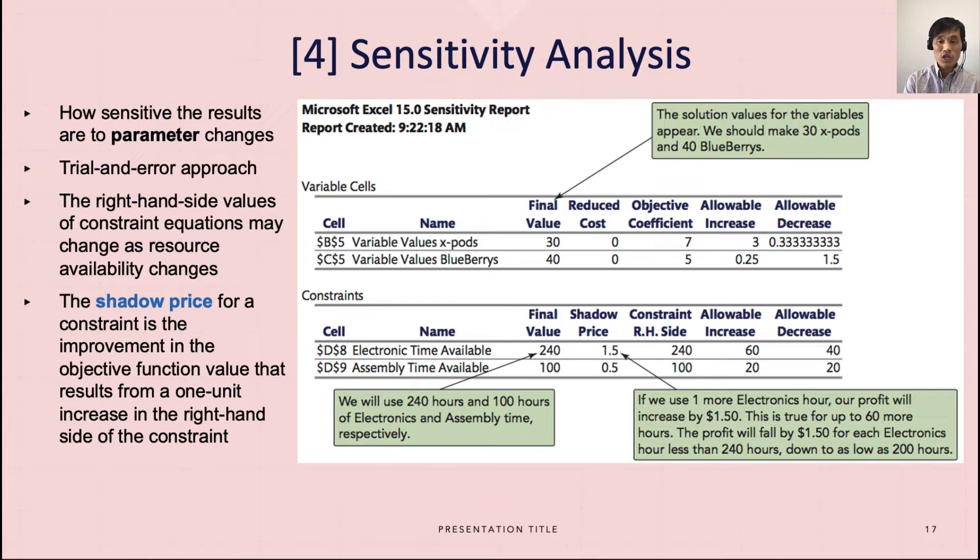Depending on these three changes, sensitivity analysis will change and give us different answers. Look at this finding, for example. We know that we have an answer after running linear programming using Excel. Final values that maximize our profit are 30 and 40, and in the constraints here we see the final value optimal values with 240 electronic time available and 100 assembly time available.